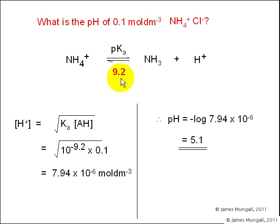Therefore, we can work out the H plus concentration by taking square root of Ka multiplied by the AH concentration, which in this case is square root of 10 to the minus 9.2, converting the pKa value into a Ka value, multiplied by 0.1, which gives 7.94 times 10 to the minus 6 moles per decimeter cubed.